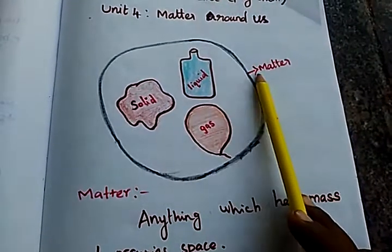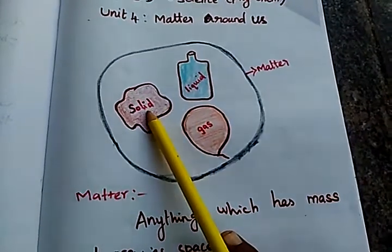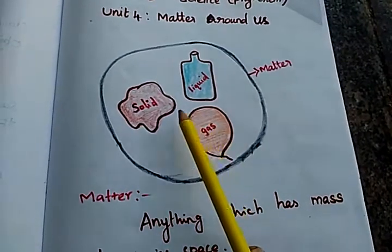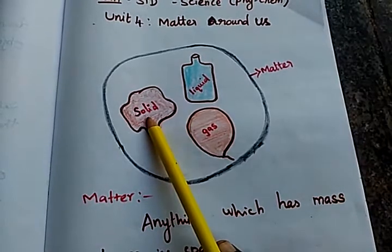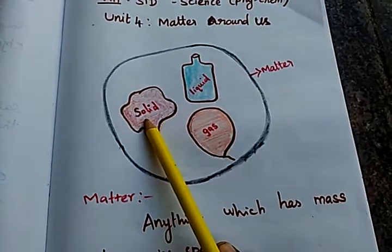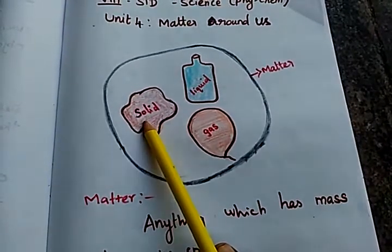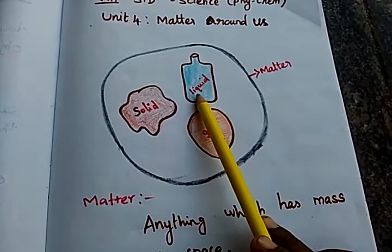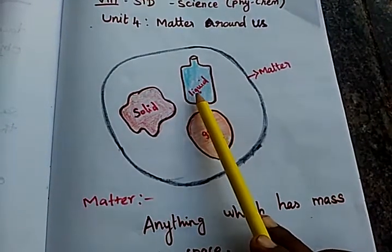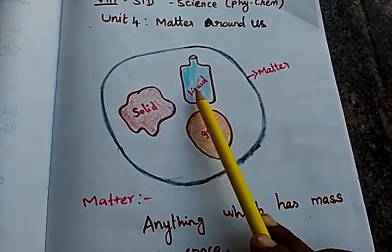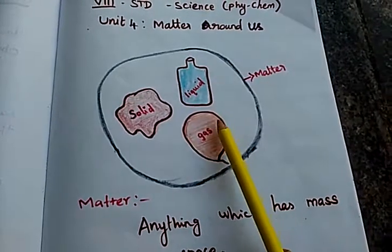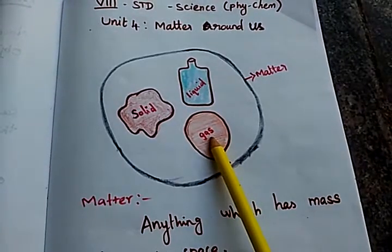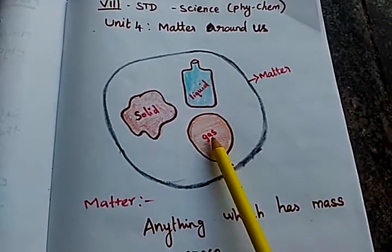Matter exists in three states: solids, liquids, and gases. Examples of solids: stone, sand, iron. Examples of liquids: water, milk, and juice. Examples of gases: oxygen, hydrogen, carbon dioxide.